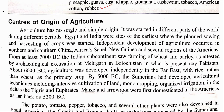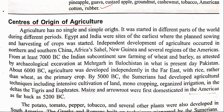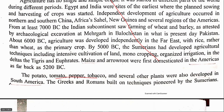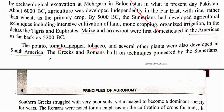Regarding the center of origin of agriculture: this is not of much importance if you have already gone through the crop production part, as it covers where crops originated. For example, sunflower came to India from the USSR. Potato, tomato, and pepper originated in South America. If you have gone through crop production, you can skip this section.